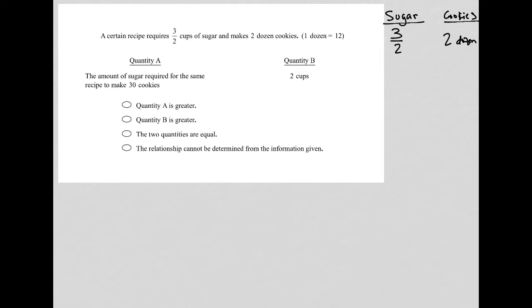Quantity A asks for the amount of sugar required for the same recipe to make 30 cookies. First thing I notice is we're not dealing with dozens, so I'm going to cross out two dozen and instead write 24 cookies.